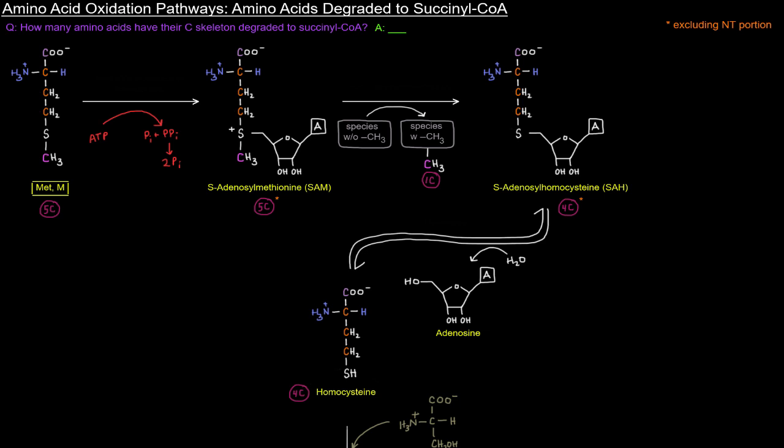Okay, so next up we've got the amino acids degraded to succinyl-CoA. How many amino acids have their carbon skeleton degraded directly to succinyl-CoA? There are four of them.